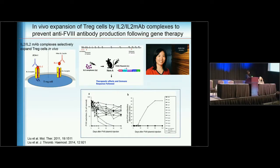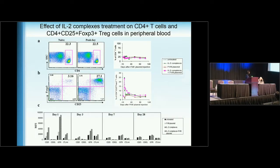We found that an IL-2 and IL-2 monoclonal antibody complex can specifically induce Treg expansion. With prior injection of this complex, we can actually induce quite long-term tolerance, in contrast to control mice that develop high-titer inhibitors after factor VIII plasmid transfer. This is due to the very robust expansion of Treg cells after the IL-2 monoclonal antibody complex injection.